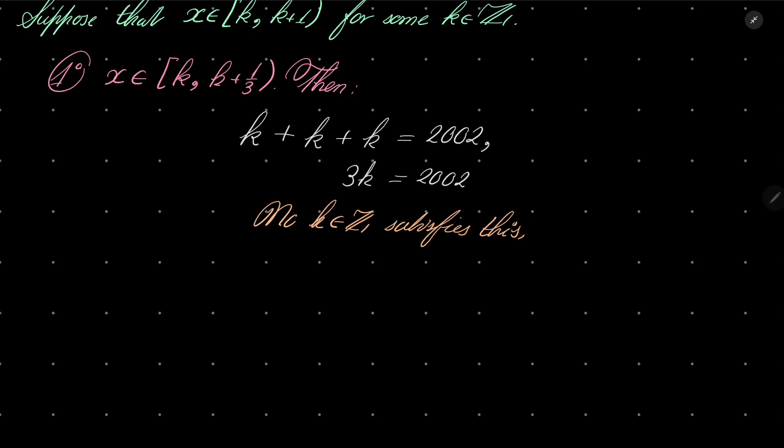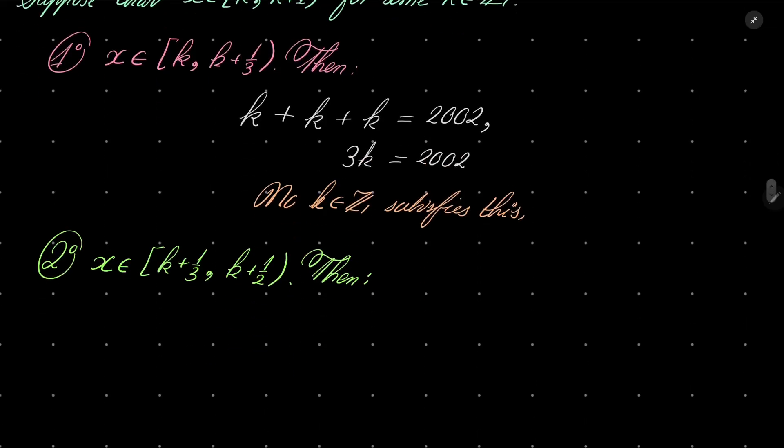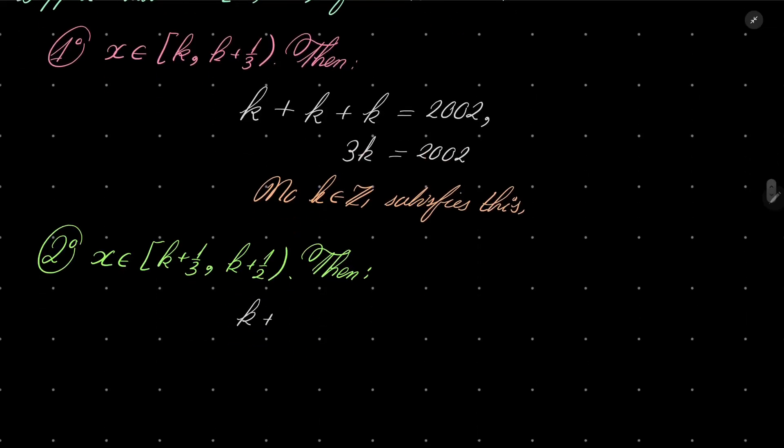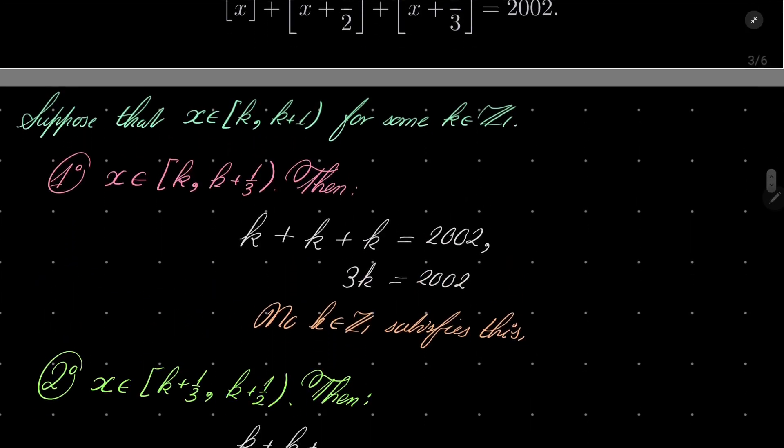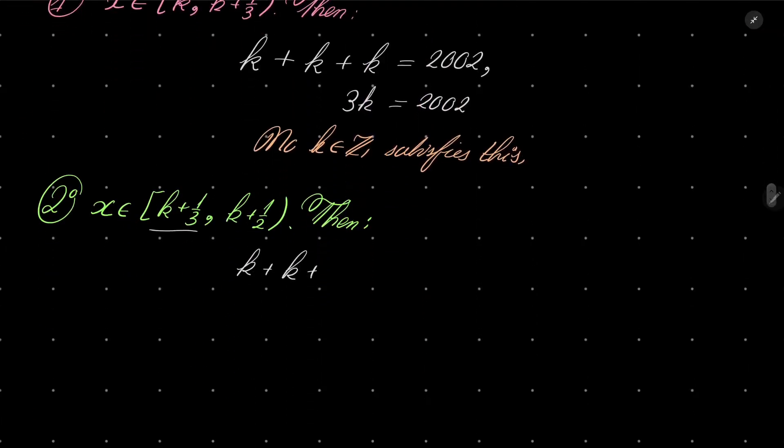Okay, let's consider our second case. Case number 2: when x is in the interval k plus 1/3 to k plus 1/2. What then? Then we have the following. Floor of x is still k, floor of x plus 1/2 is still k. But this time, floor of x plus 2/3 is k plus 1.